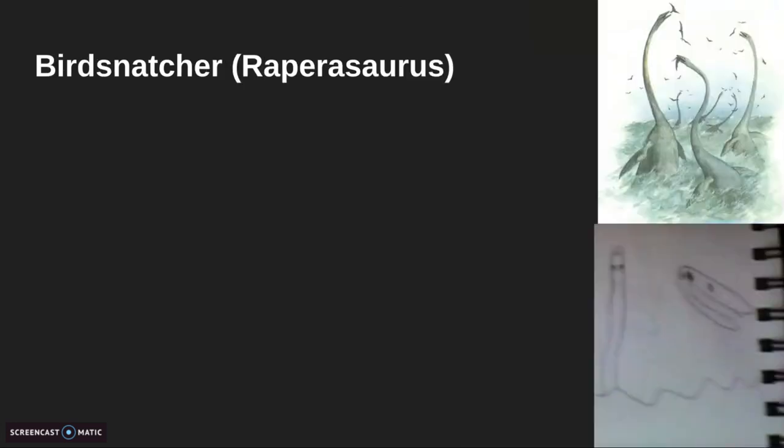All right, the last one on our list is the bird snatcher, or the Raperasaurus. This elasmosaurus-like animal just snatches birds out of the sky, but they couldn't do this. This couldn't happen. Otherwise, its neck would probably break in half. Instead, I made it so that it had a really long neck, like a really long neck, and a really long jaw with lots of teeth to catch the birds or the pterosaurs. That's pretty much it for the bird snatcher.